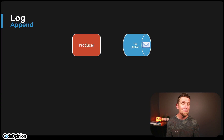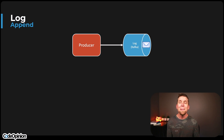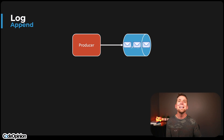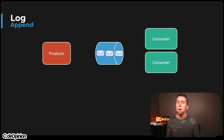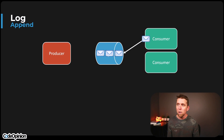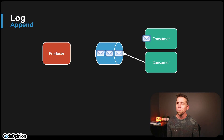First, Kafka is not a queue. It's a distributed log. When we're appending events — with our producer publishing new events to topics — we're appending new events to those topics. With the publish-subscribe capabilities, we're publishing messages to topics and we have two different consumers subscribing to those topics. They can both consume the very first message independently and in parallel — they're decoupled.